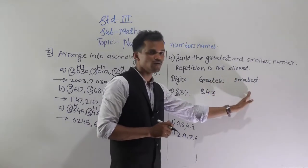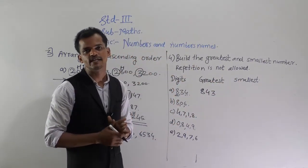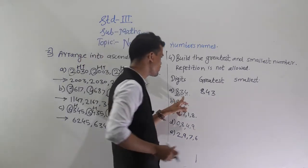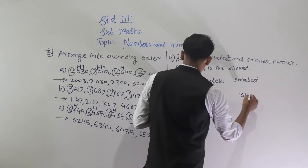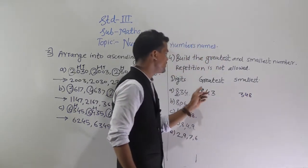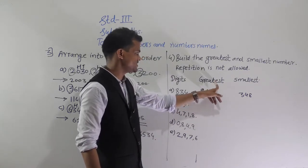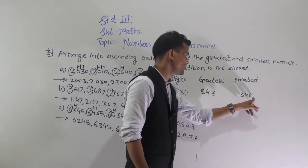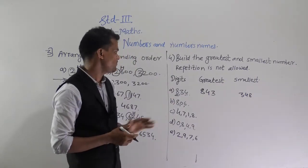To form the smallest number, arrange the digits in ascending order: 3, 4, and 8. So 843 is the greatest number formed and 348 is the smallest number formed.